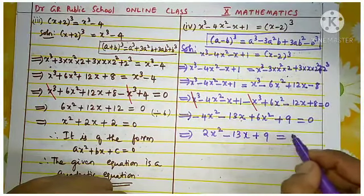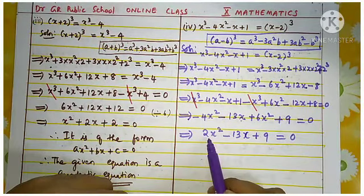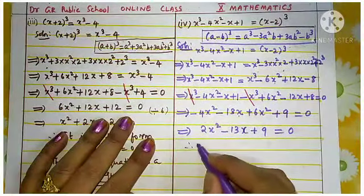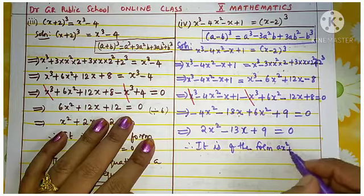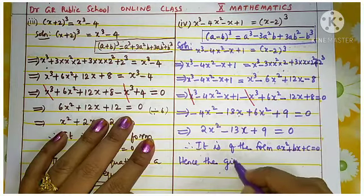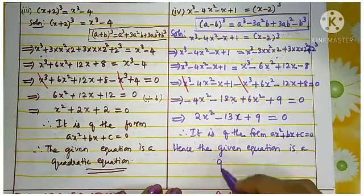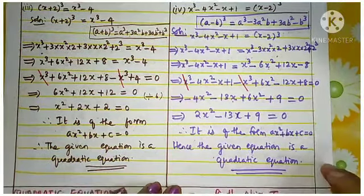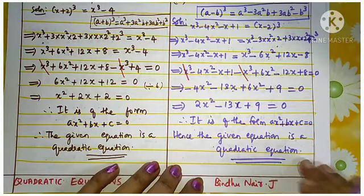We get 2x squared minus 13x plus 9 equal to 0. This is the standard form ax squared plus bx plus c equal to 0, where a is 2, b is minus 13, and c is 9. Therefore it is of the form ax squared plus bx plus c equal to 0. Hence the given equation is a quadratic equation.